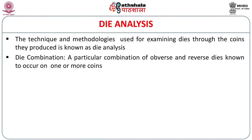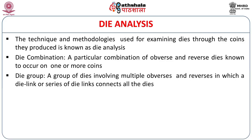The number of dies can be estimated from the coins produced by them. A die combination is a particular combination of obverse and reverse dies known to occur on one or more coins. A die group is a group of dies involving multiple obverses and reverses in which a die link or series of die links connects all the dies. When we get a die group, all dies are interconnected and this connectivity is very important.